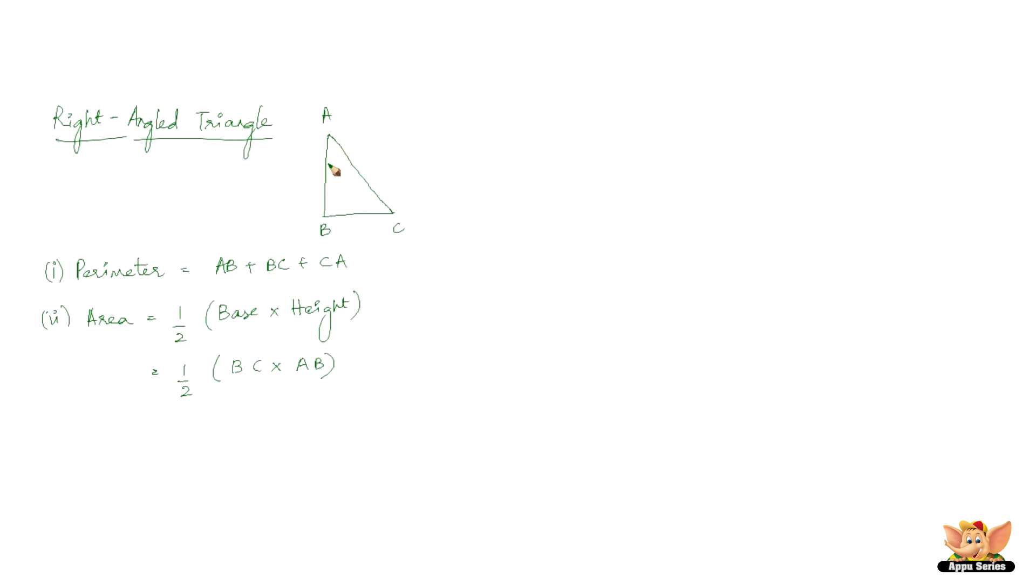Perimeter of this triangle would be AB+BC+CA because we just need the total length of the sides of a closed figure.